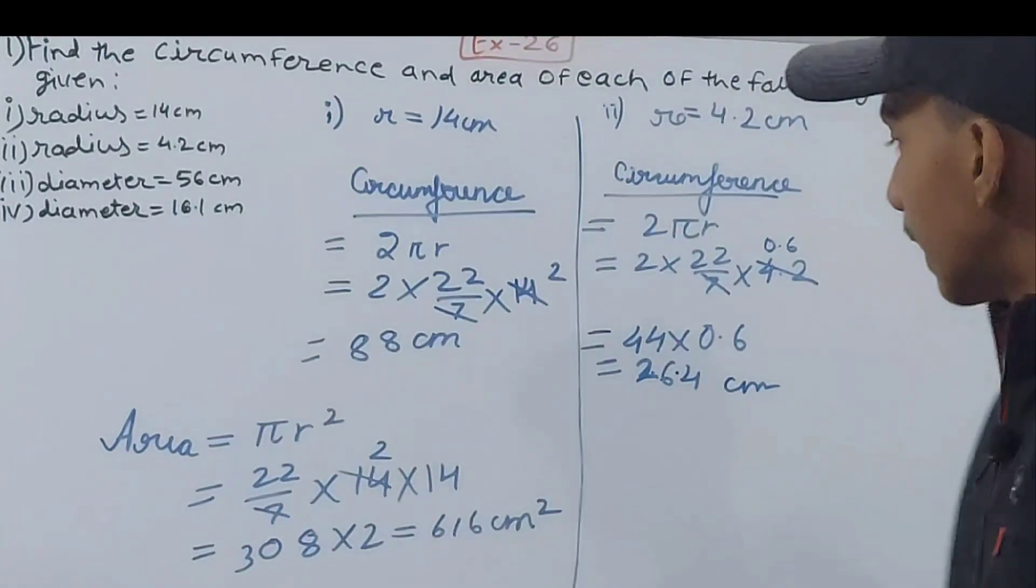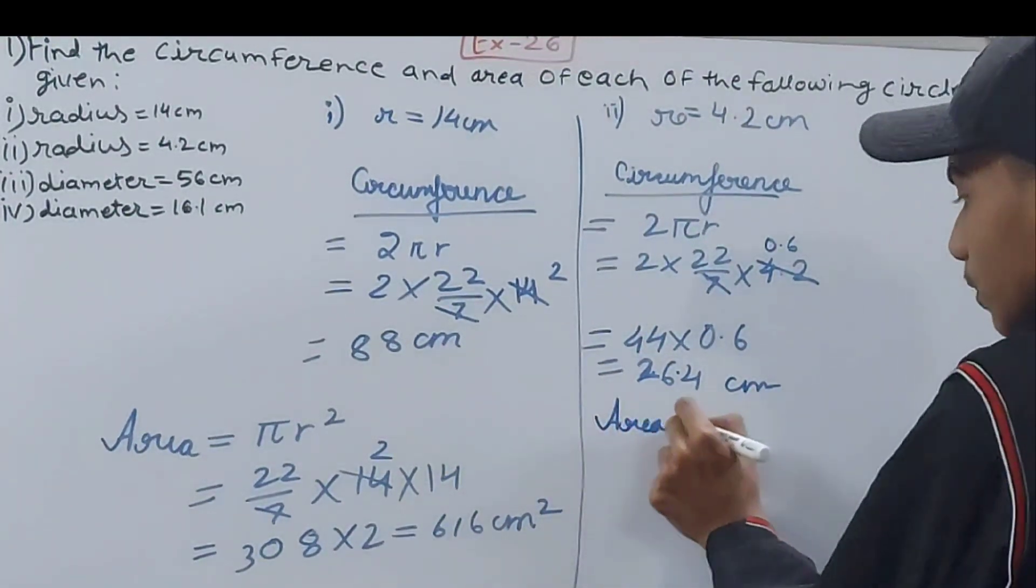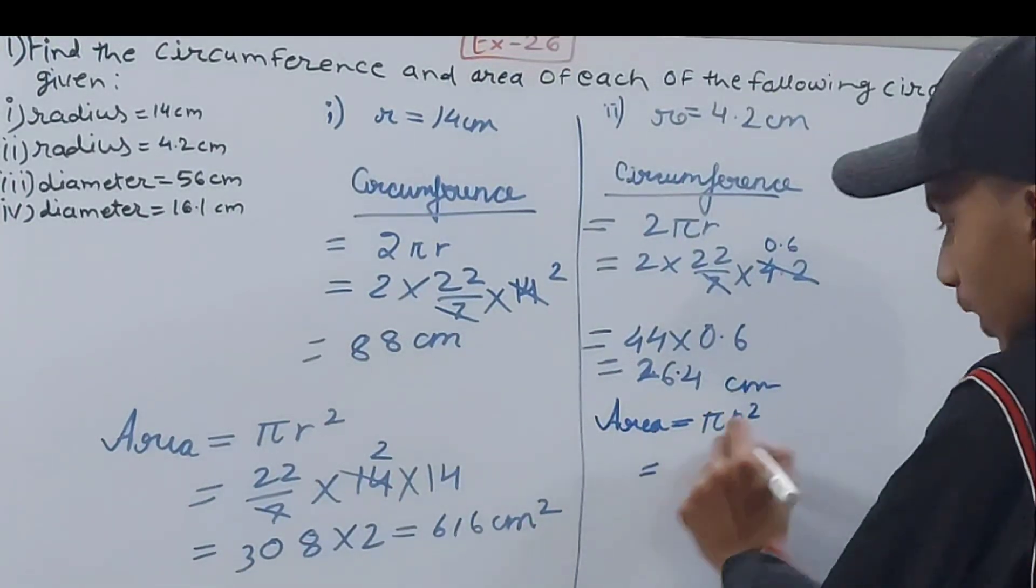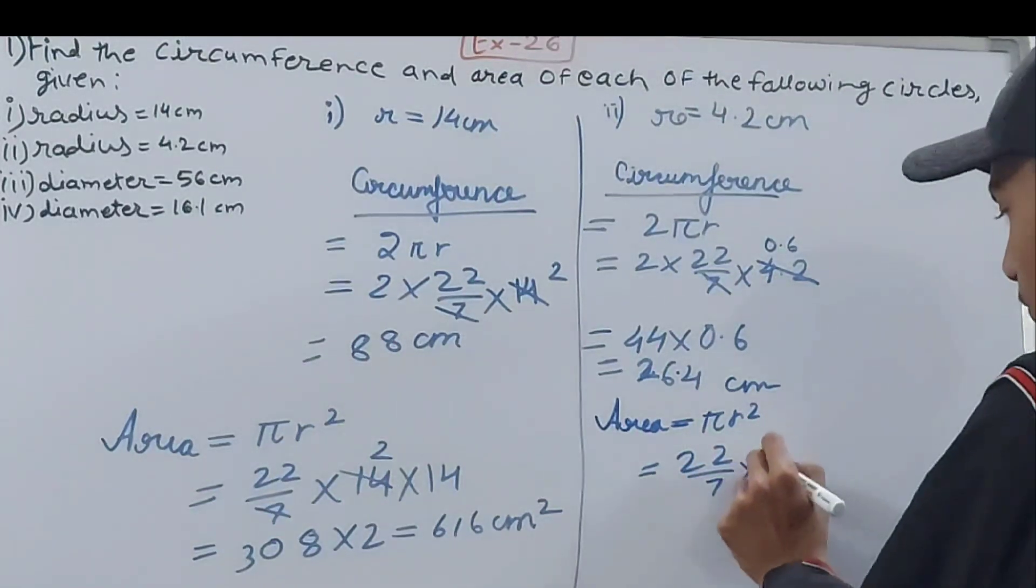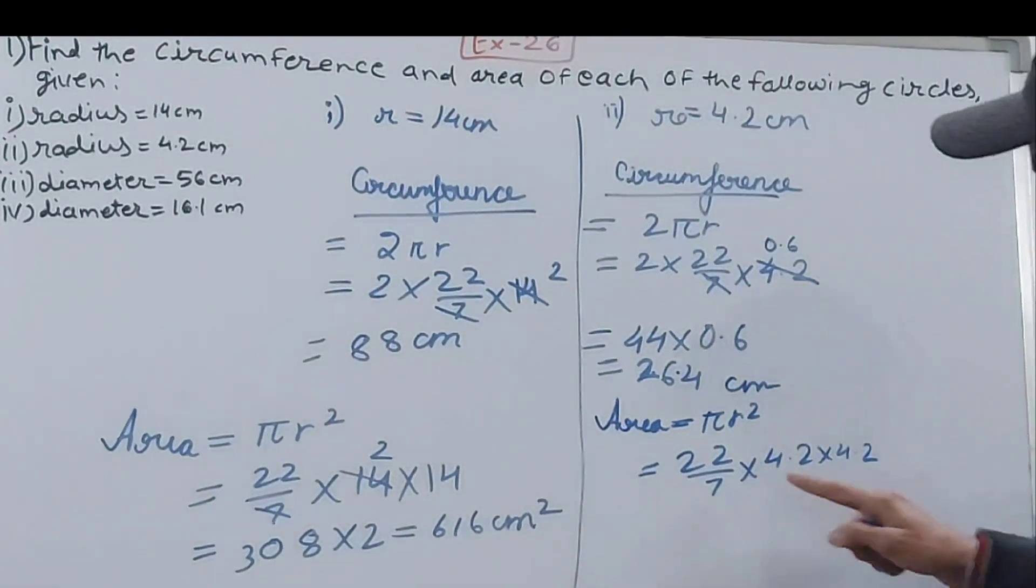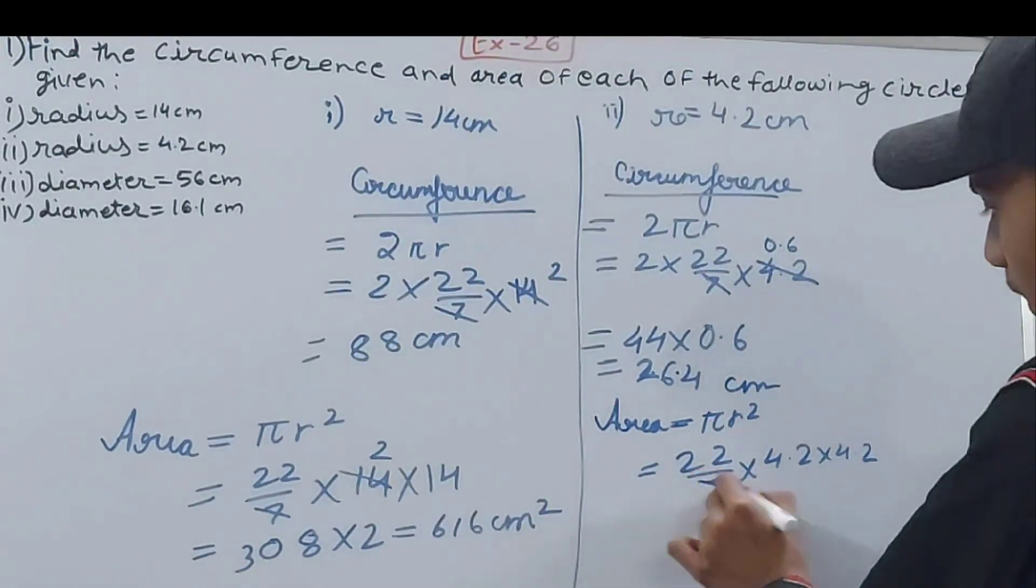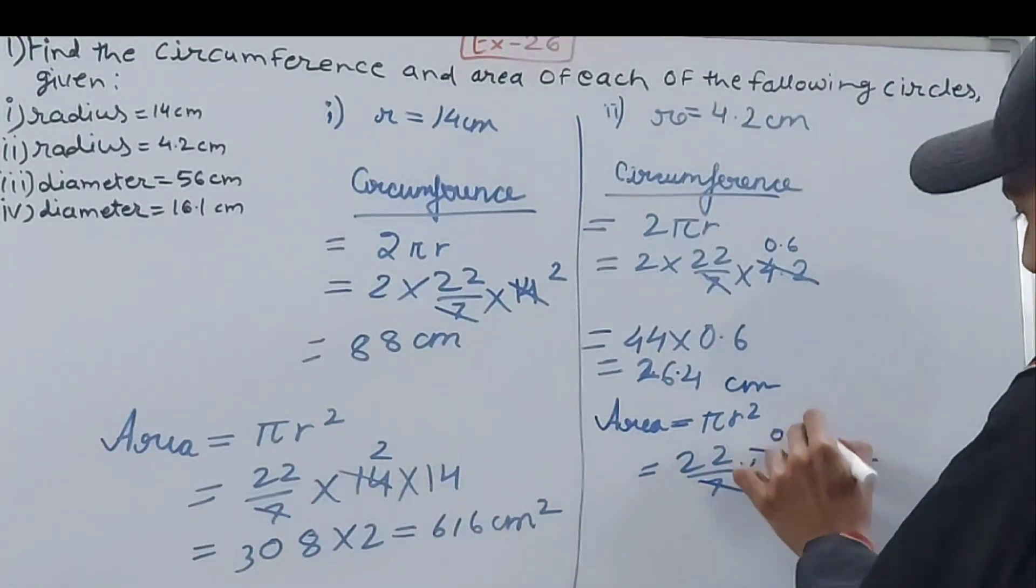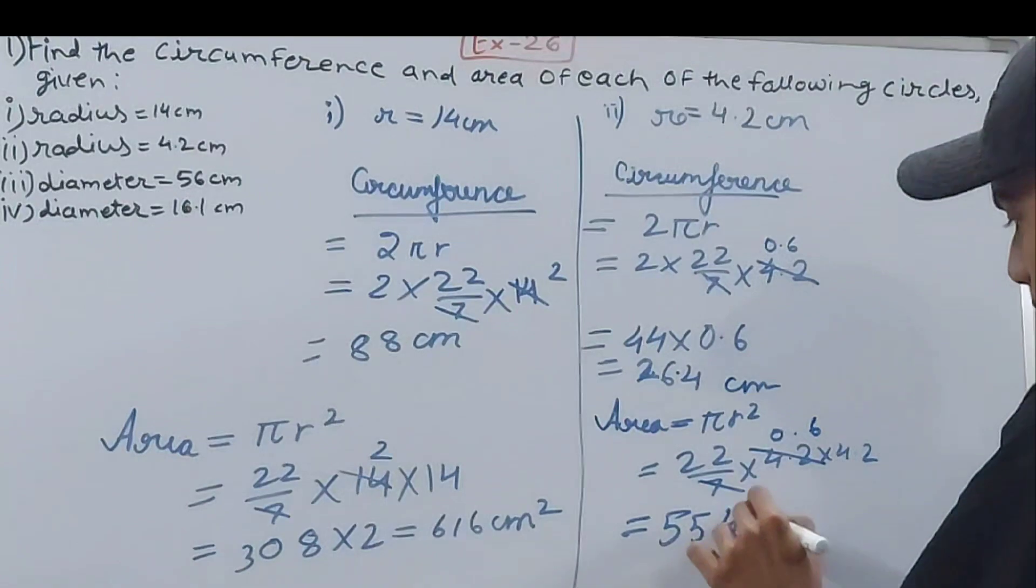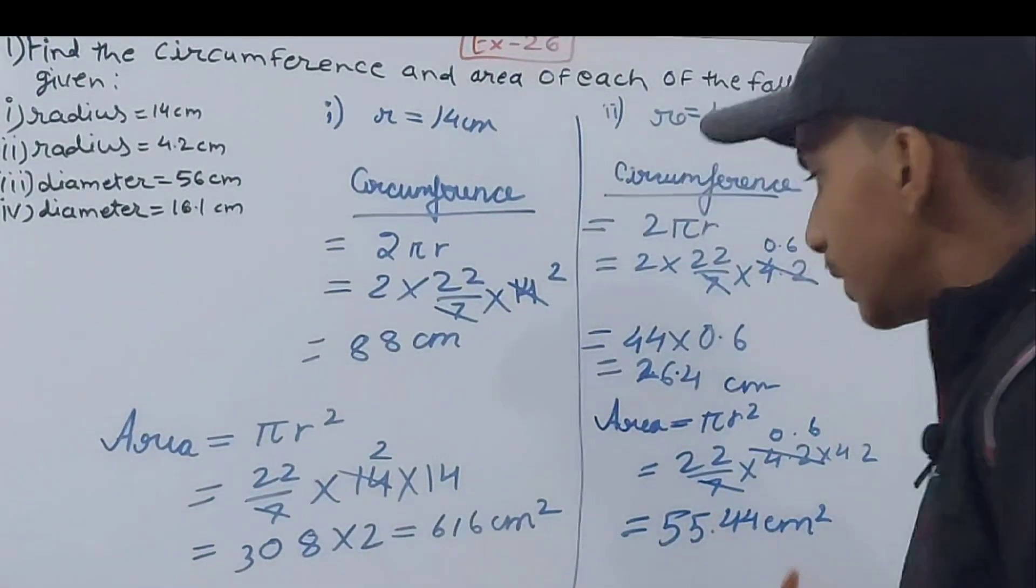That becomes the circumference of the circle. Now next the area is equal to πr². So π is 22/7 × 4.2 × 4.2 because 4.2 is my radius and square of that will be 4.2 × 4.2. After solving we will get 55.44 square centimeters. This will be the answer.